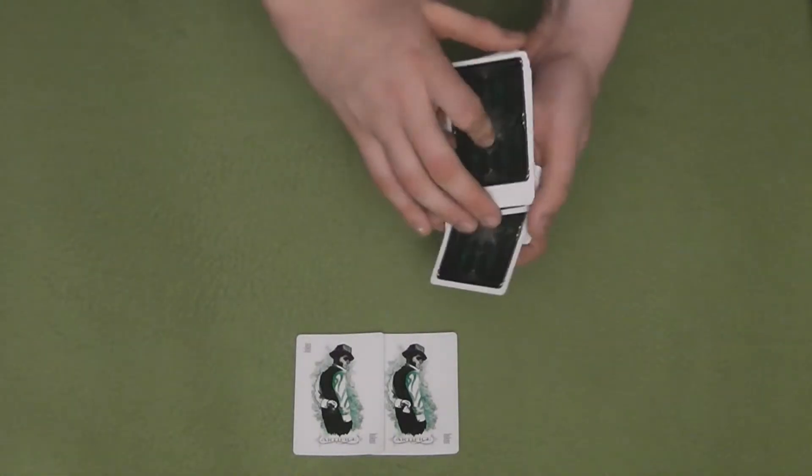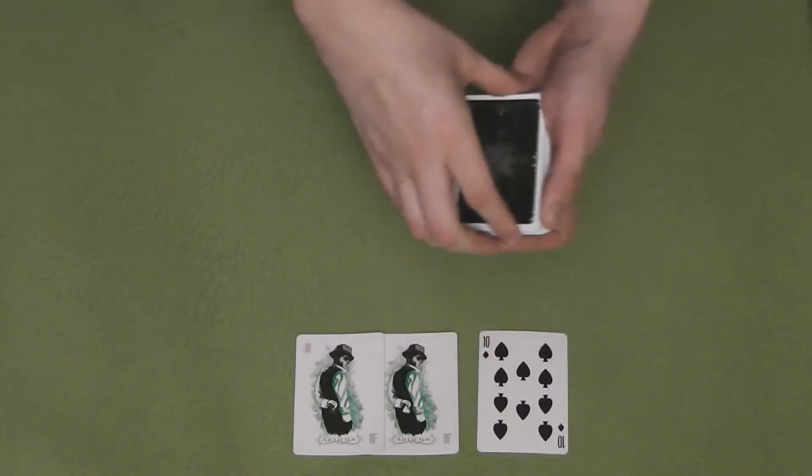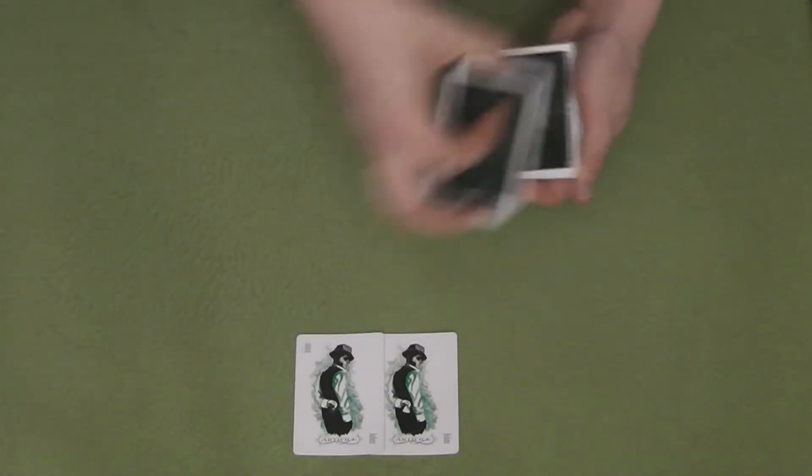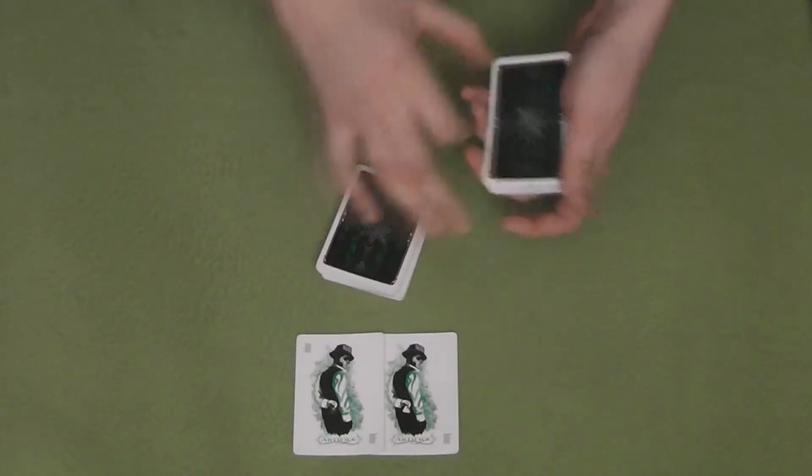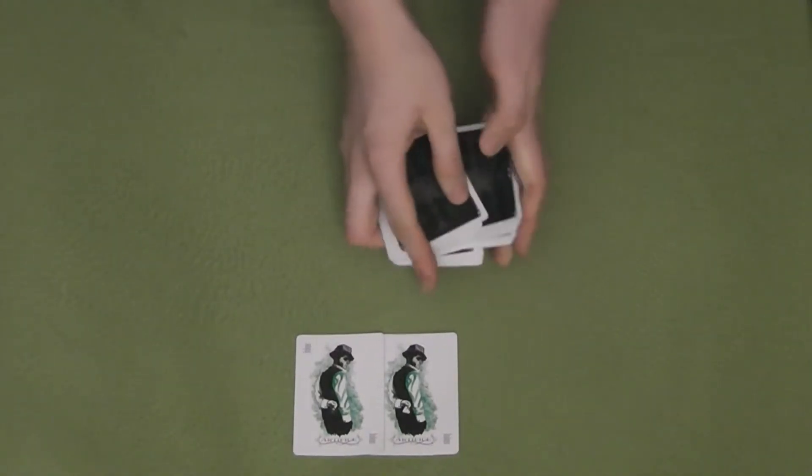The card that I've chosen is the Ten of Spades. I will now bury the selected card into the deck by doing a few cuts, just as so. And I'll give the deck a riffle shuffle, so there can be no way of knowing where that Ten of Spades has gone.